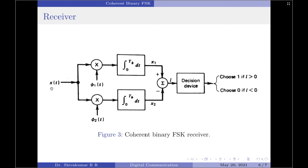Let us now apply the received noisy sequence to the receiver shown here. Both correlators are given the same input, which is the received noisy signal x(t). We are required to have a locally generated pair of coherent reference signals — phi 1(t) and phi 2(t) — the same as used at the transmitter. The output of each correlator is a coefficient, giving us two coefficients from the two correlators.